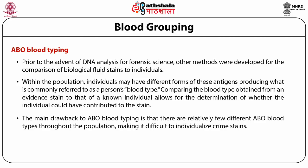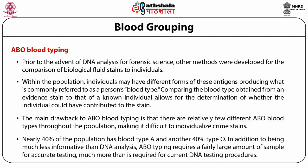The main drawback to ABO grouping is that there are relatively few different ABO blood types throughout the population, making it difficult to individualize crime stains. Nearly 40% of the population has blood type A, another 40% type O. In addition to being much less informative than DNA analysis, ABO typing requires a fairly large amount of sample for accurate testing — much more than is required for current DNA testing procedures. With the development of faster and more accurate DNA methods, most forensic laboratories have given up ABO testing.